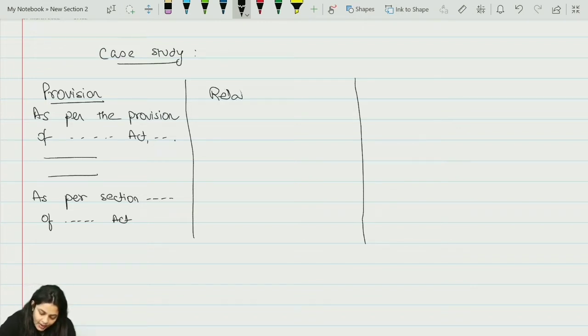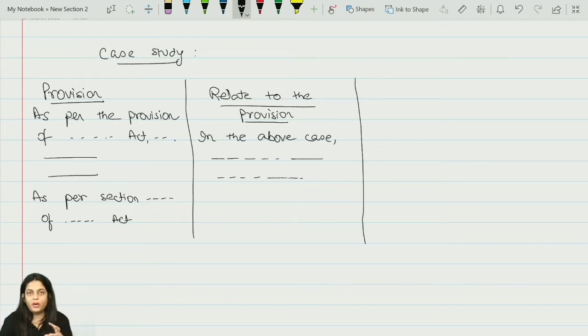The second paragraph is relate to the provision. Basically, here we are going to write a part of the question. When I say write the question, what people do? They copy word to word. No, I am just going to take that relevant part of the question which is applicable here and accordingly I am going to answer. Basically, it starts with in the above case. Then I write the relevant part of the question and I try to connect it with the provisions.